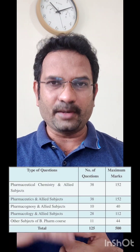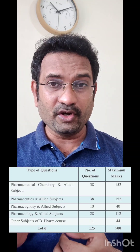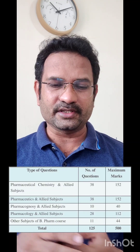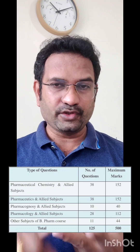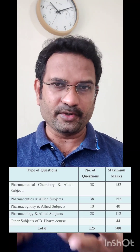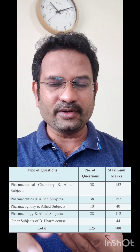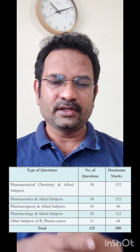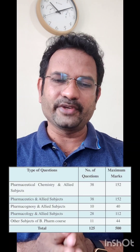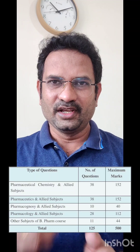Then you have pharmacognosy for 10 questions. After that, pharmacology and its allied subjects — which include anatomy and physiology, pathophysiology, and pharmacology — give 28 questions. Other subjects of the B-Pharm course will give you 11 questions.